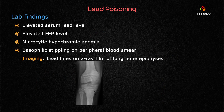Lab findings include elevated serum lead level, microcytic hypochromic anemia, and basophilic stippling — a key marker on the peripheral blood smear. Also remember that lead lines on X-ray film are mainly seen on the long bone epiphysis; these are called lead lines.